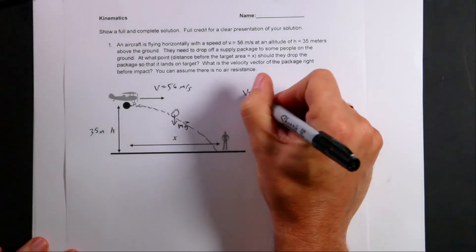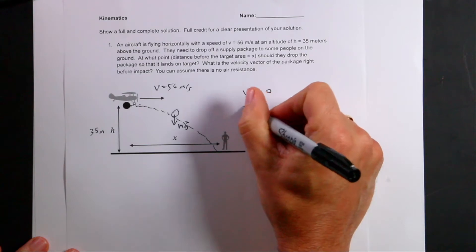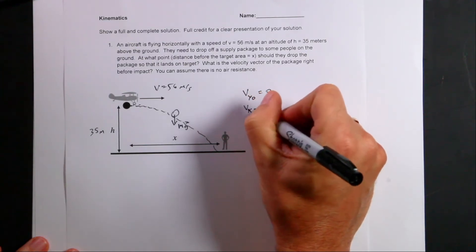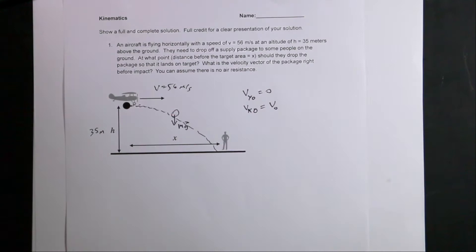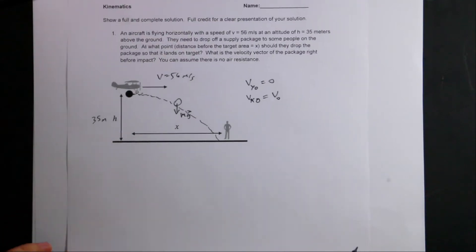It's projectile motion with initial y velocity equal to zero, initial x velocity equal to v zero, whatever that is. So we have your normal projectile motion problem. So let's solve our normal projectile motion problem.